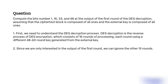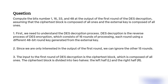Since we are only interested in the output of the first round, we can ignore the other 15 rounds. The input to the first round of DES decryption is the ciphertext block, which is composed of all ones. The ciphertext block is divided into two halves: the left half L and the right half R.